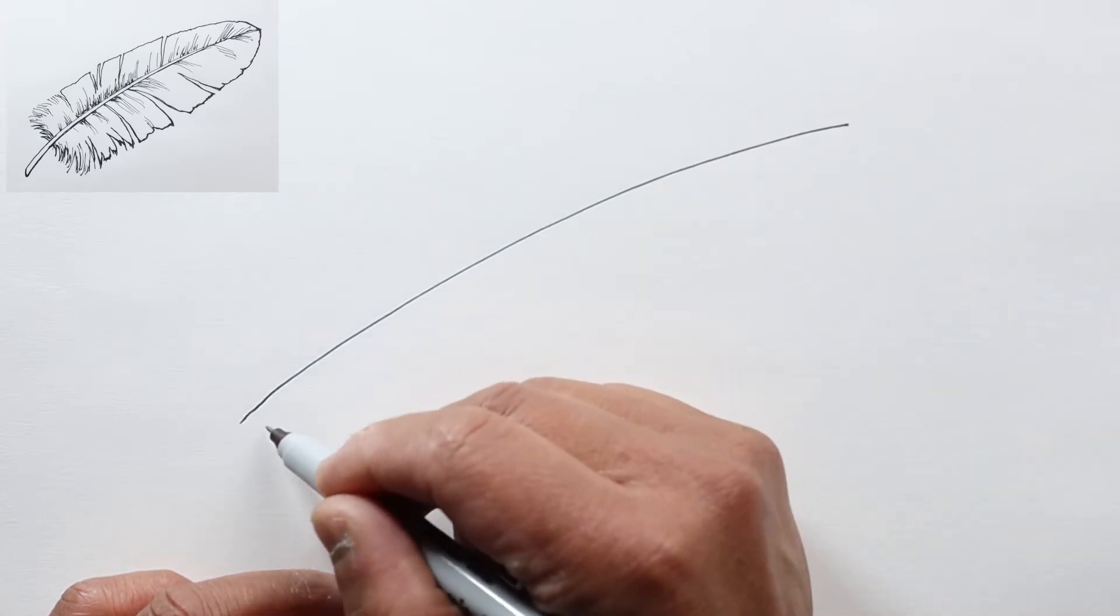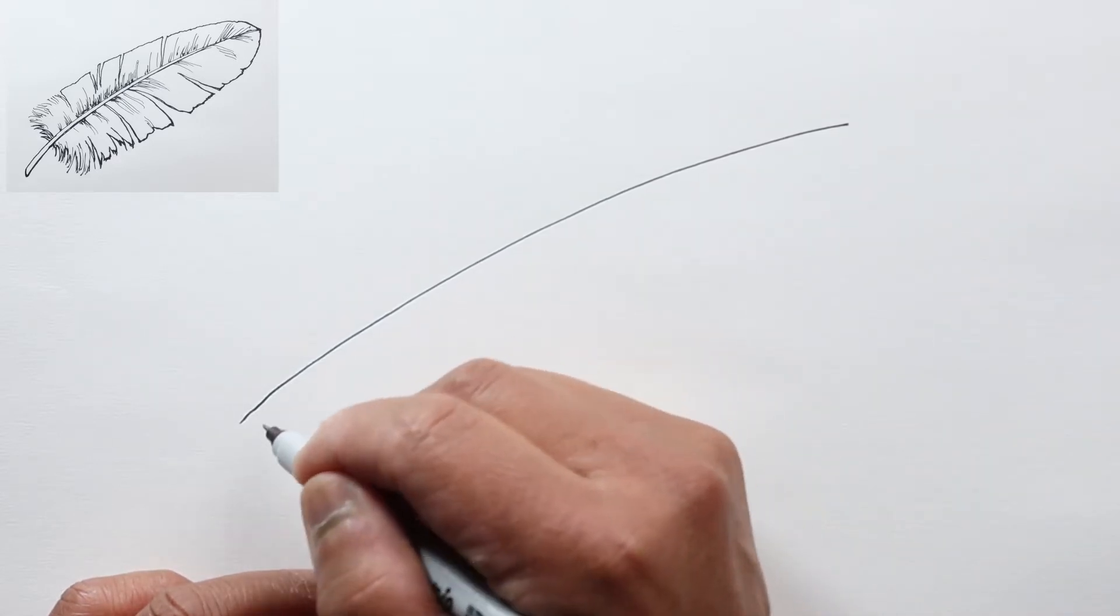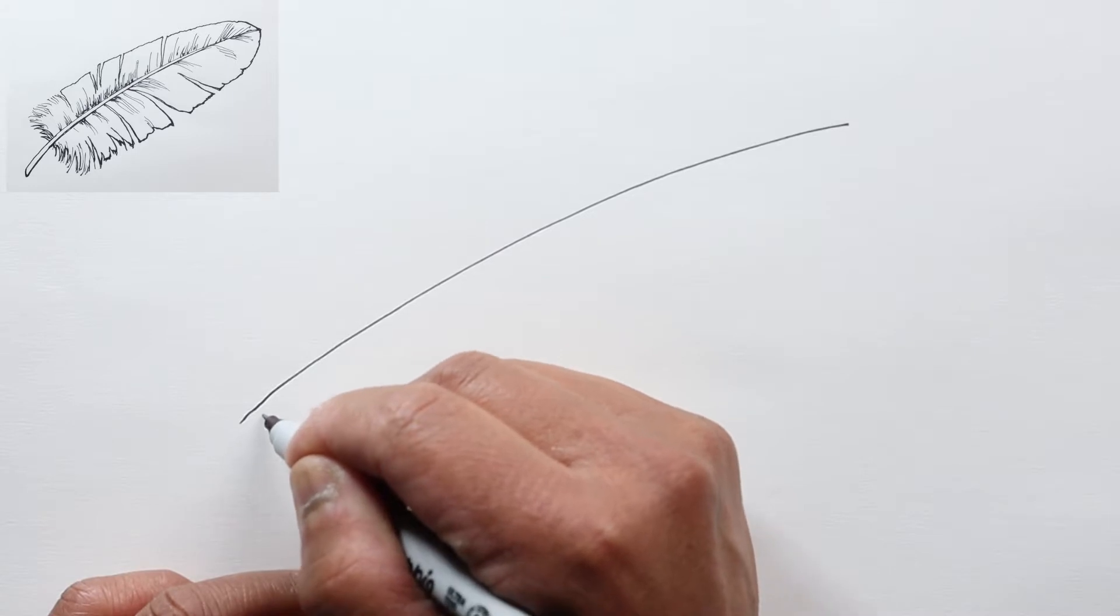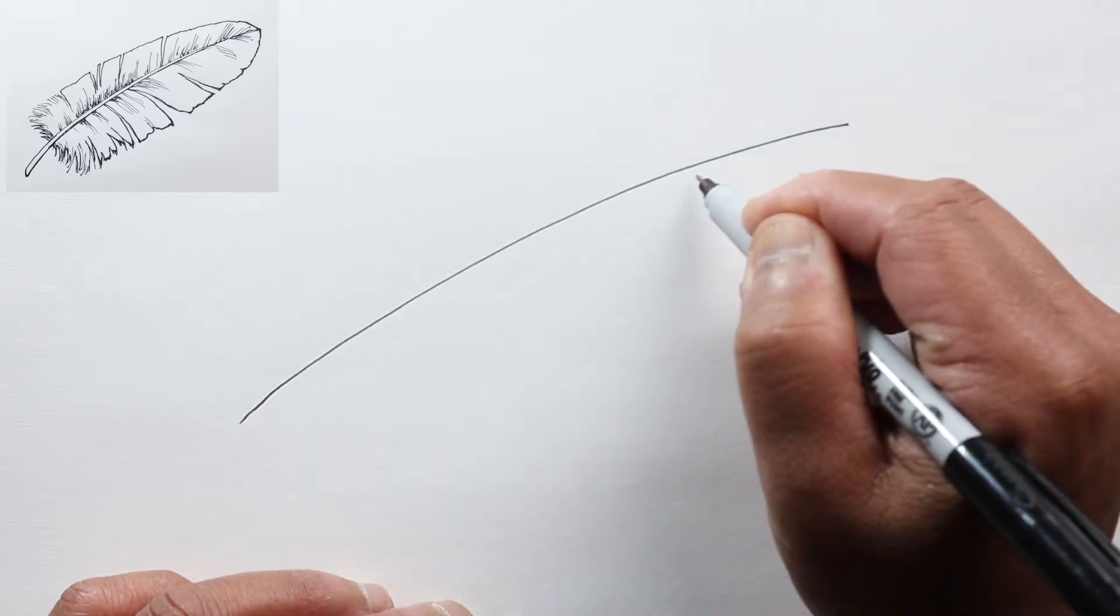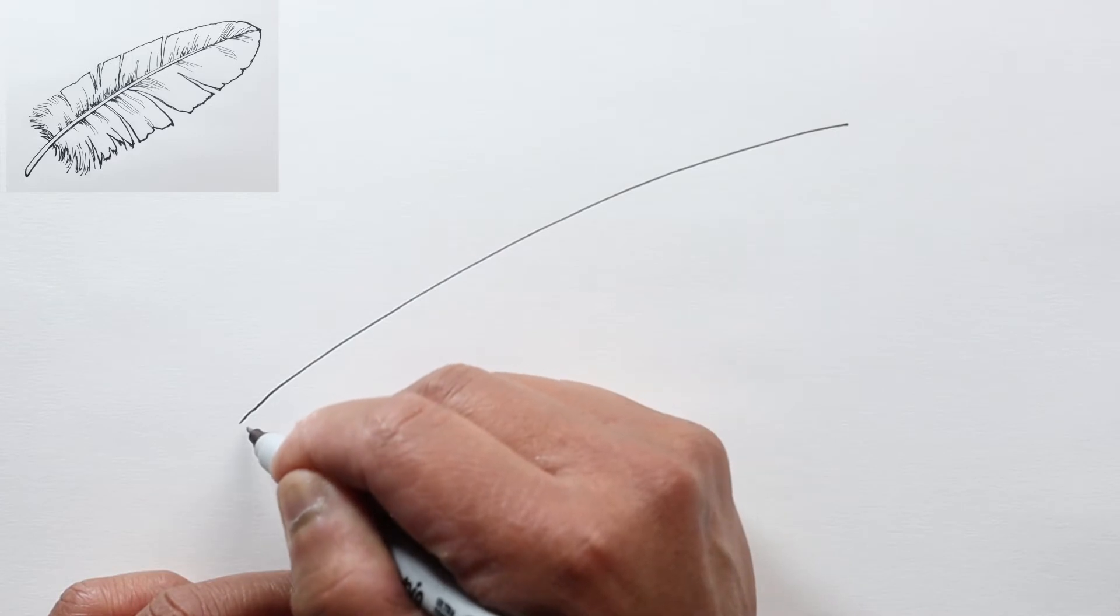And then draw another line almost parallel. It starts down here, and then as we get closer to the tip, it's going to get closer together to a point.